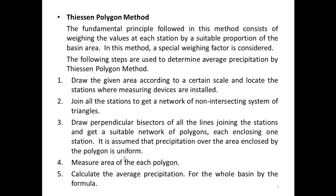Step 1: Draw the given area to a certain scale and locate the stations where measuring devices are installed. Step 2: Join all the stations to get a network of non-intersecting triangles. Step 3: Draw perpendicular bisectors for all the lines joining the stations to get a network of polygons, each enclosing one station — it is assumed that precipitation over the area enclosed by each polygon is uniform. Step 4: Measure the area of each polygon.